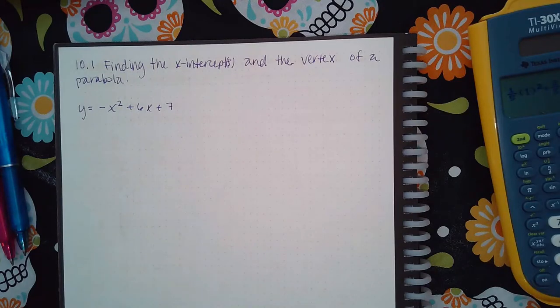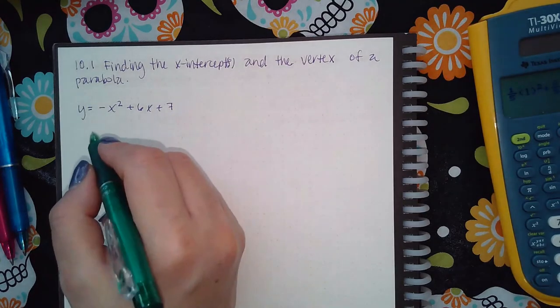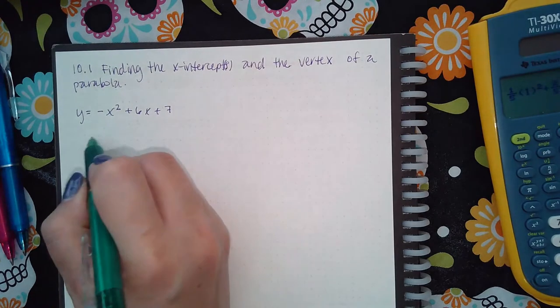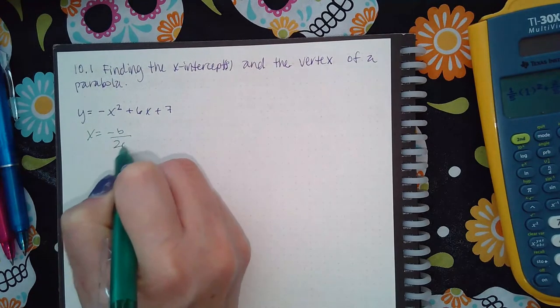For this topic, it is finding the x-intercepts and the vertex of a parabola. Finding the vertex of the parabola is what we've been doing all along when we were graphing. So you do need to find the negative b over 2a.